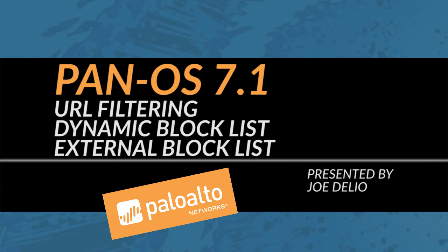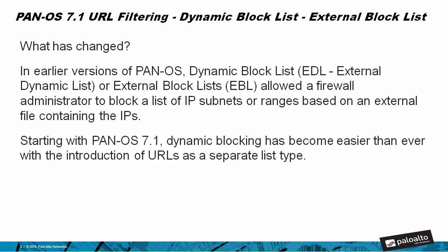In earlier versions of PanOS, dynamic block lists — also known as EDL or external dynamic lists, or external block list EBL — allowed a firewall administrator to block a list of IP subnets or ranges based on an external file containing a list of the IPs you wanted to have blocked.